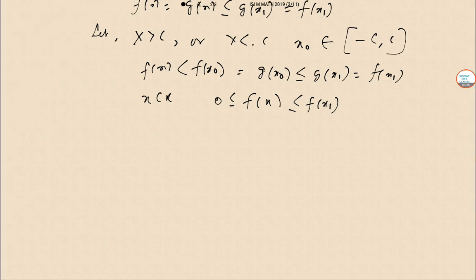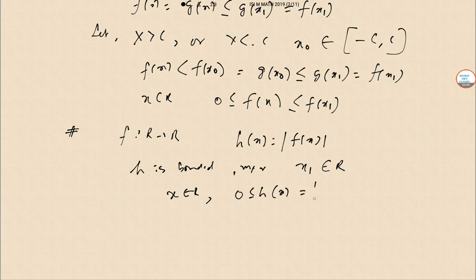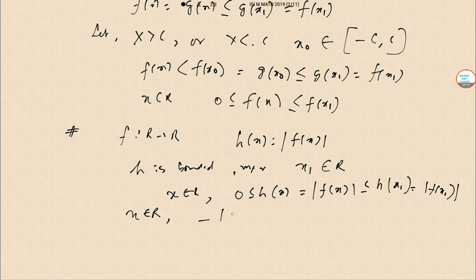Now for the second part: let f: R → R be a continuous function satisfying the given condition. Then h(x) = |f(x)| is a non-negative continuous function also satisfying the same condition. From part 1, h is bounded and attains its maximum value. So there exists x₁ in R such that for all x in R, 0 ≤ h(x) = |f(x)| ≤ h(x₁) = |f(x₁)|. Therefore for all x in R, −|f(x₁)| ≤ f(x) ≤ |f(x₁)|, so the function is bounded.